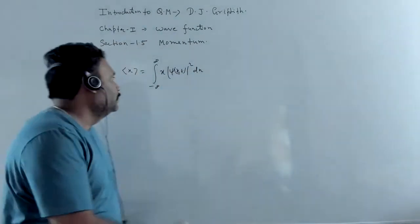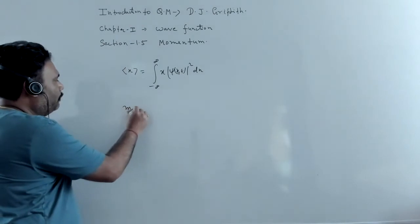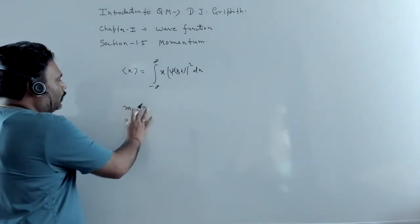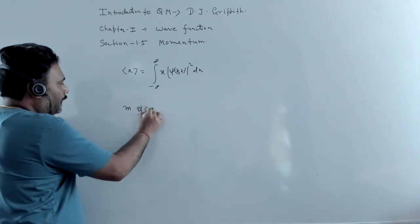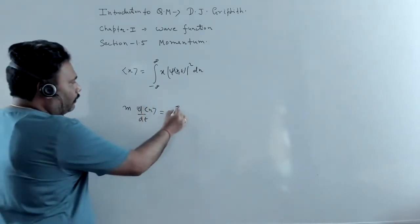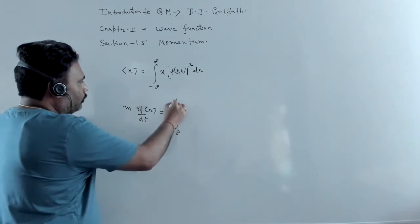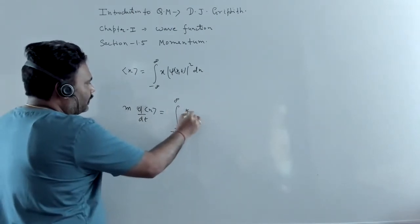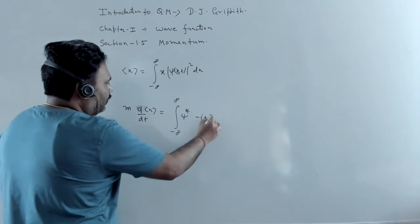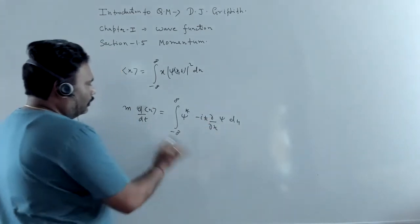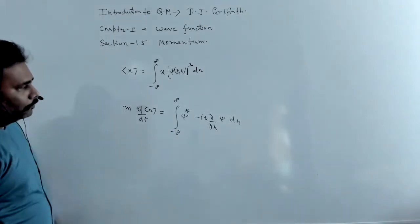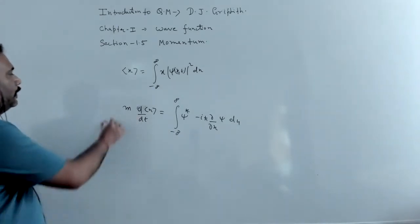it is beautifully proved that m into time derivative of expectation value of x is given by minus infinity to plus infinity psi star minus ih bar del upon del x psi dx. So from here, we can easily figure it out.